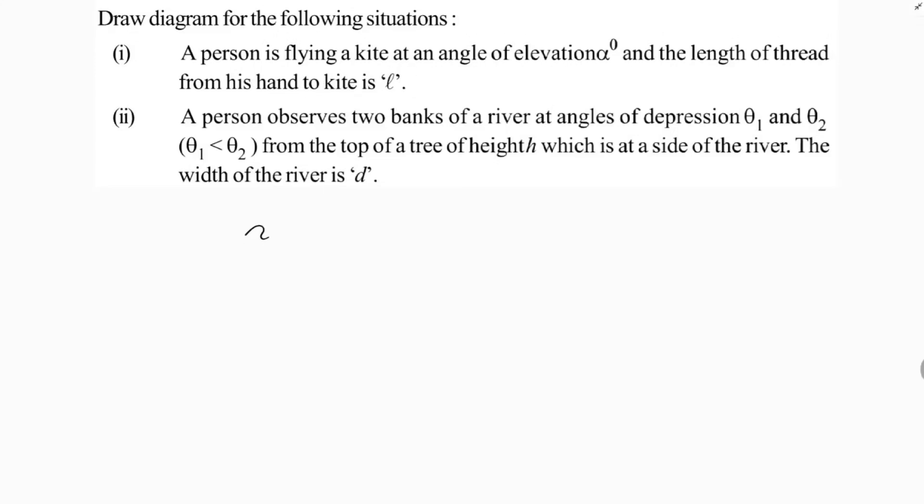So here see, kite is flying here at K and horizontal surface ground level, and the angle of elevation is the angle between line of sight and horizontal surface. So this angle is alpha degrees and length of the kite. See, this is length of the kite.